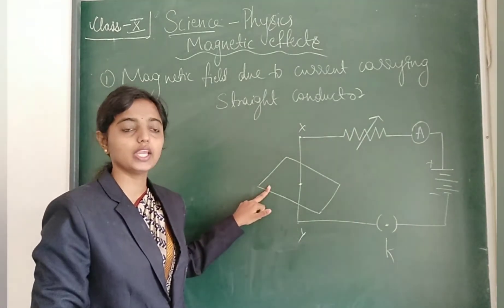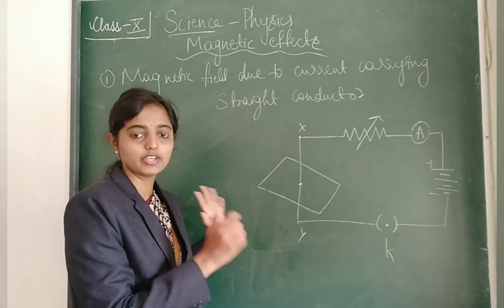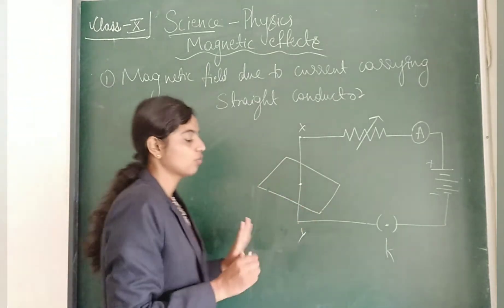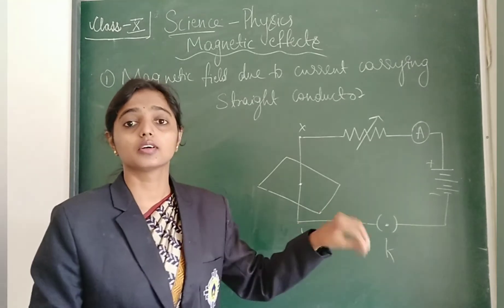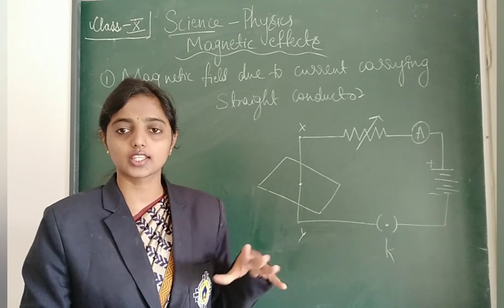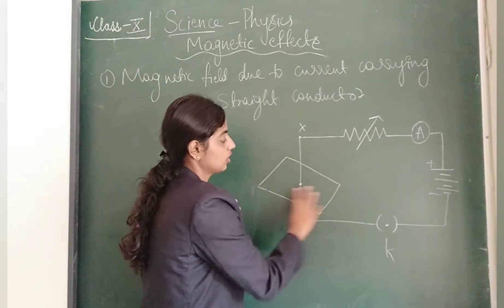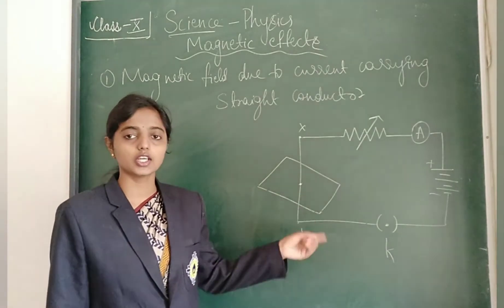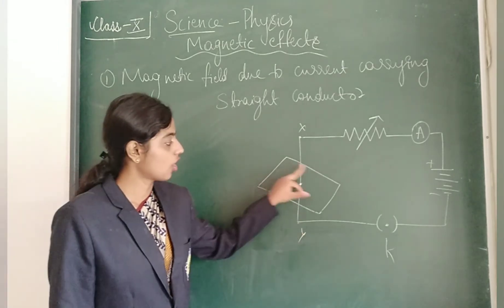The cardboard sheet should be inserted in such a way that it should not slide up and down — it should be fixed properly using some stand. Later, to know the pattern of magnetic field lines, just as we used iron filings with the bar magnet, we use the same here. Sprinkle the iron filings around the conductor on the cardboard sheet. That completes our setup.